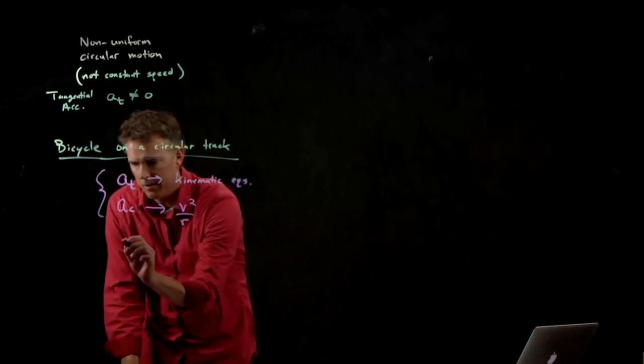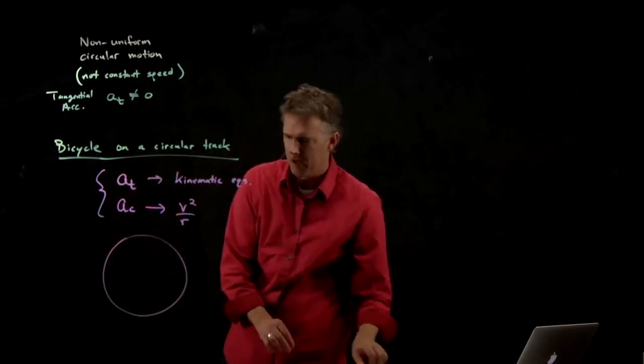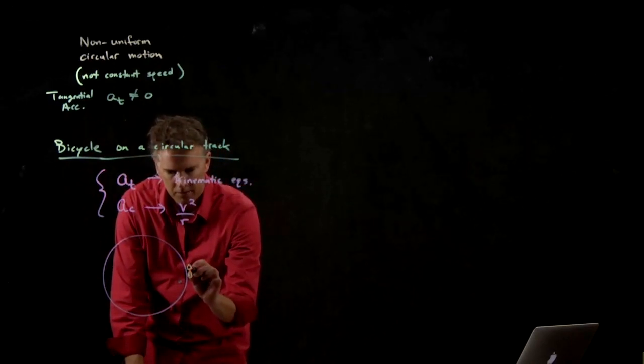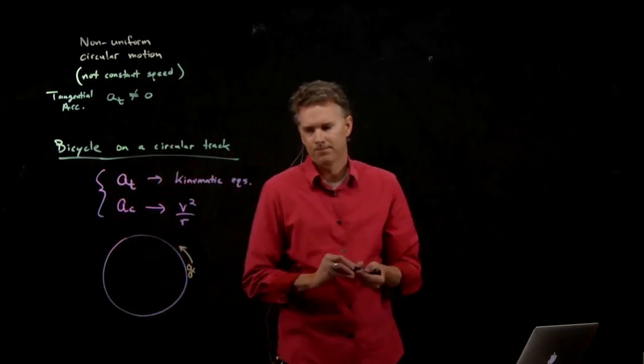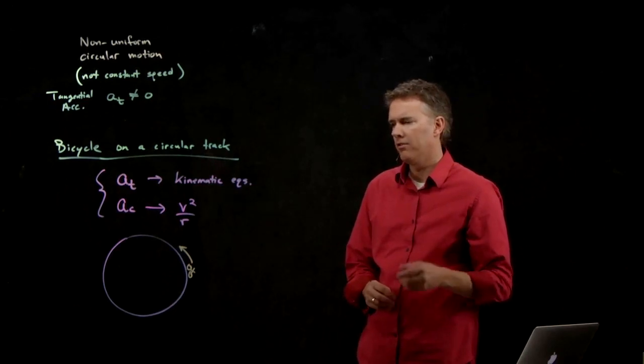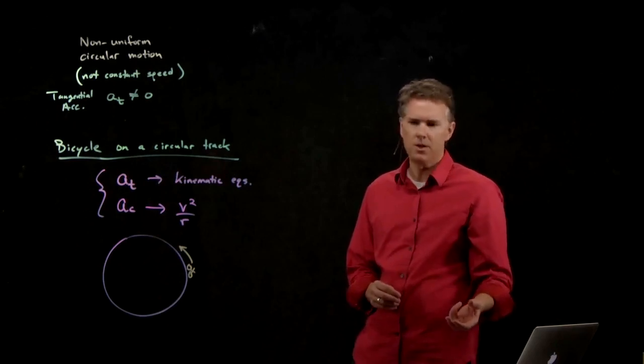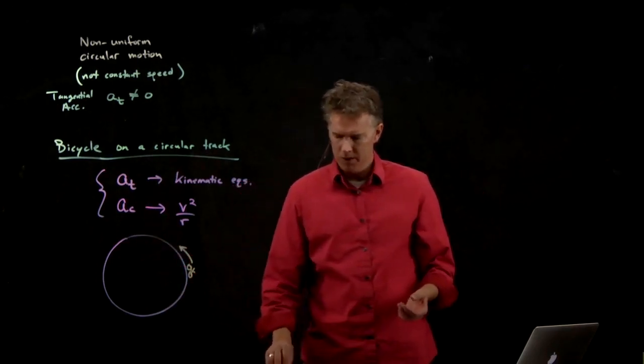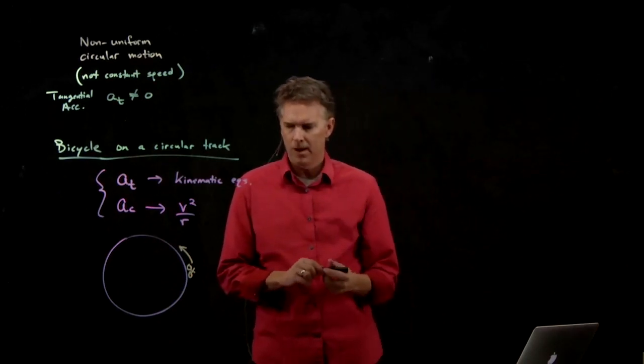Here is the circular track, and we have a bicyclist that is racing around. Here is my bicycle. Person going around. And we need to figure out something about the net force or the net acceleration on the bicyclist after they make one full rotation. So we need to think a little bit carefully about this.